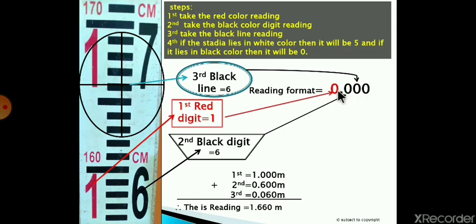Our reading format is like this. After the point there will be three digits. The first digit is red color, so this red color reading will be placed here. Then the second digit will come from the black digit.